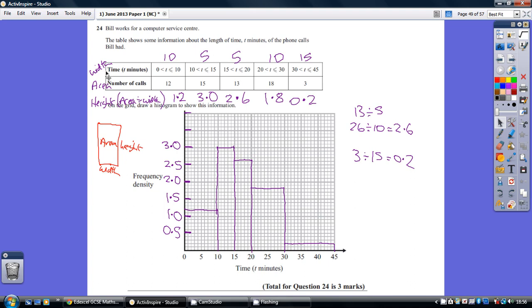Now the width is the time, so first of all just work out how long each of these widths are, so obviously 0 to 10 is 10, 10 to 15 is 5, and so on. So there are the widths, we've got the areas, we've got the widths.